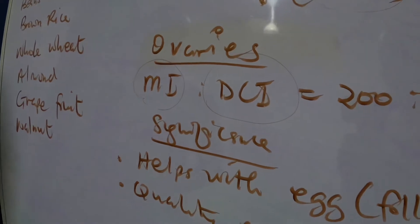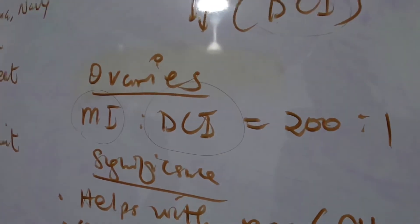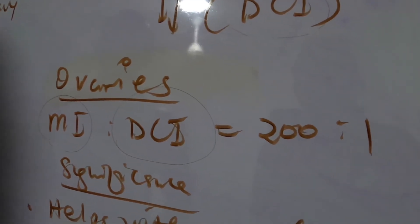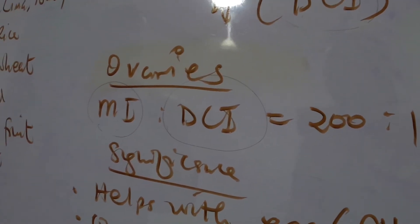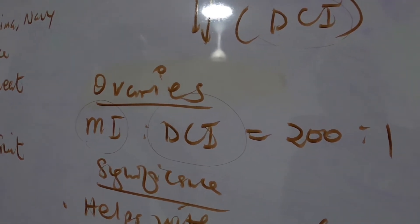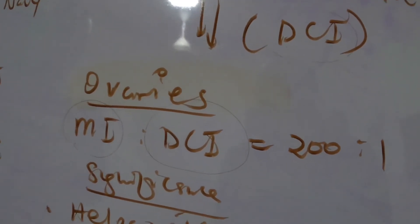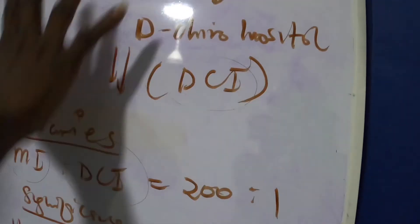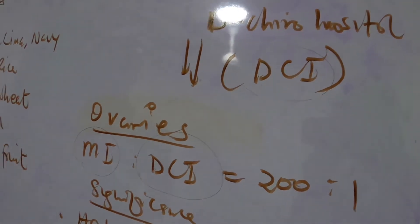Now low levels of DCI has been shown to actually worsen PCOS symptoms, so it's able to cause hair loss or probably hirsutism.